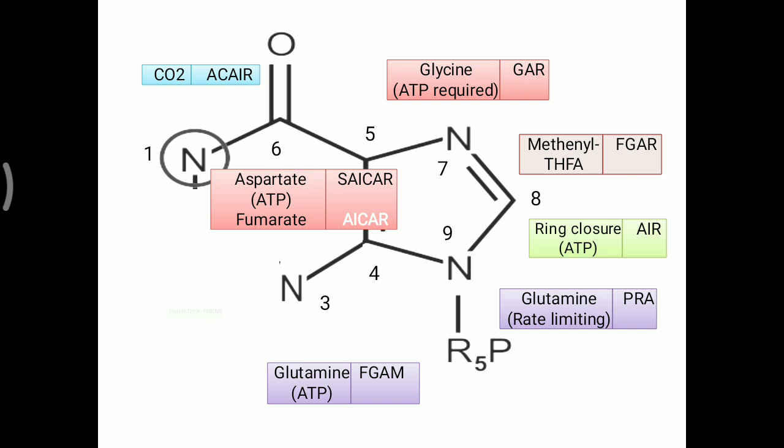Over the ICAR molecule, formyl-THFA donates a formyl group, and lastly it makes FICAR. Up to here the second ring is not yet closed. Once the ring is closed, it initially makes IMP, inosine monophosphate.